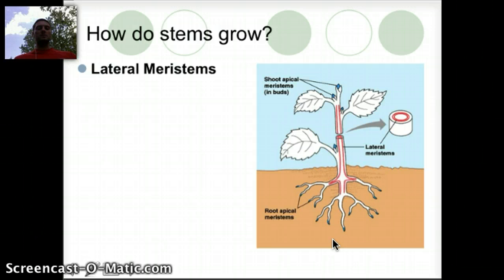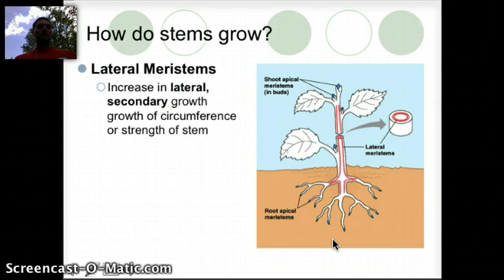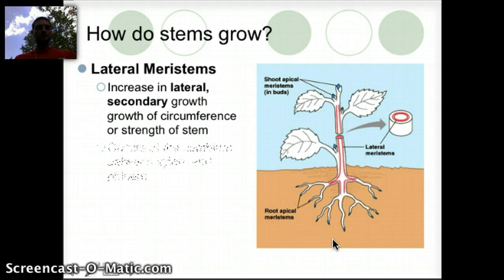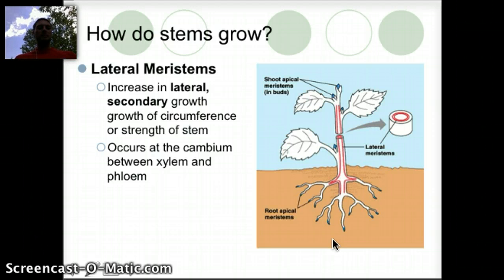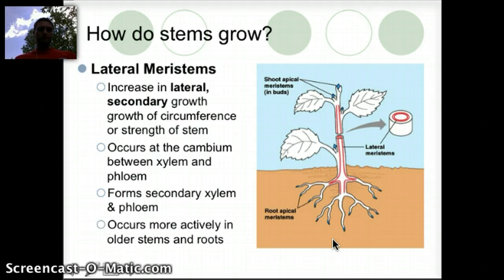There's also the possibility for stems to grow outward, which we call lateral meristem. These are portions where the plant is growing laterally and expanding — this is secondary growth, essentially the growth in circumference of the stem. It occurs in a specific area called the cambium between the xylem and the phloem, forming secondary xylem and phloem. It occurs most actively in older stems and roots.